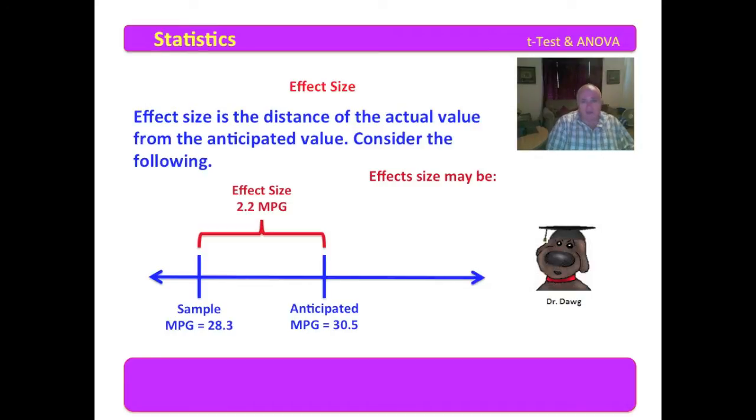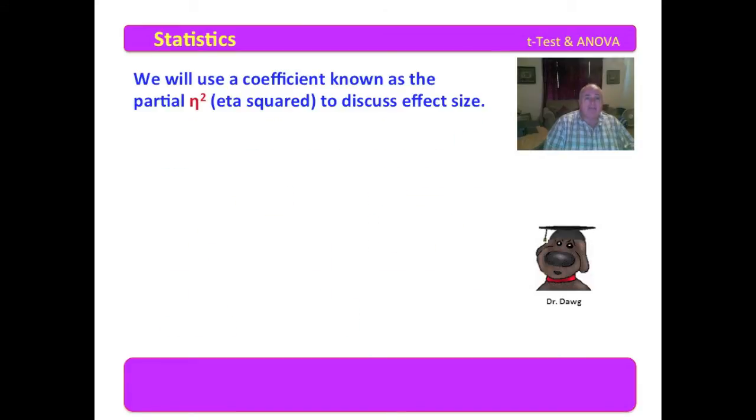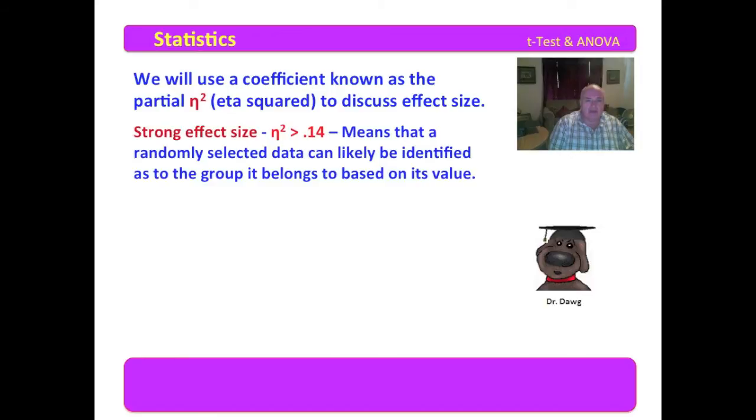Effect size may be strong, it may be moderate, or it may be weak. So we have three values of effect size that we can have: strong, moderate, or weak. We will use a coefficient known as the partial eta squared to discuss effect size. Eta squared will stand for the coefficient that gives us the effect size.